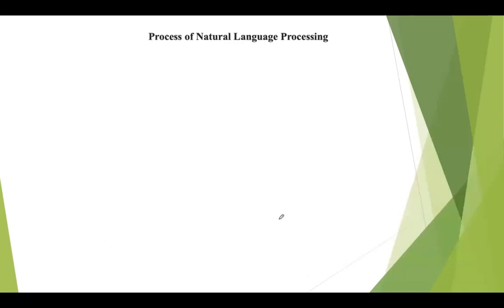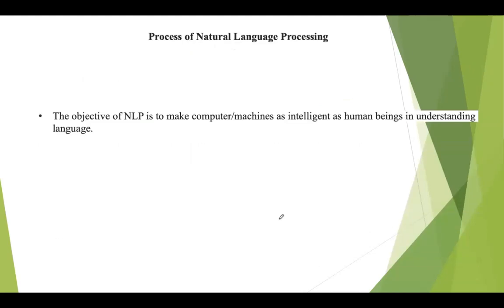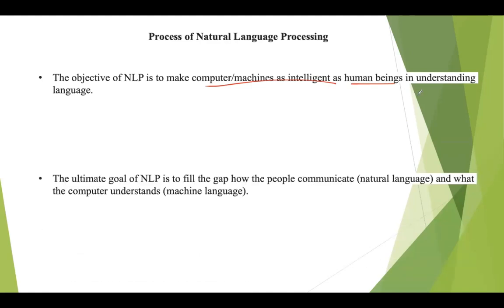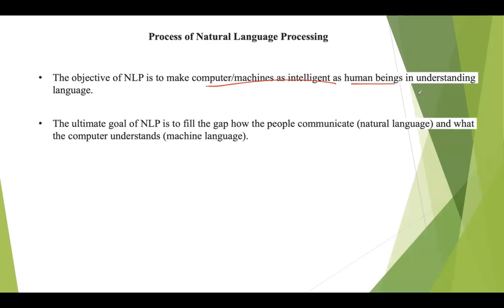NLP means it is the ability of machines to understand and interpret human language the way it is spoken or written. The objective of NLP is to make computers or machines as intelligent as human beings so that they can understand the language. The main goal of NLP is to fill the gap between how people communicate, which is in natural language, and what computers understand, which is machine language. Natural language processing always tries to fill this gap between human and computer communication.